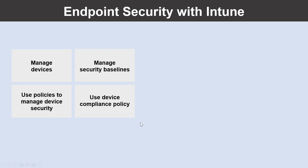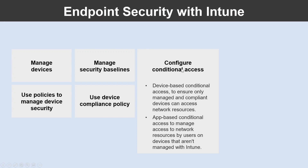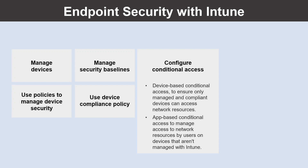Another way to use endpoint security is through device compliance policy. Use device compliance policy to establish the conditions by which devices and users are allowed to access the corporate network and company resources. Intune can also be integrated with Azure Active Directory conditional access policies to enforce compliance. Intune passes the result of your device compliance policy to Azure AD, which then uses conditional access policies to enforce which devices and apps can access your corporate resources.